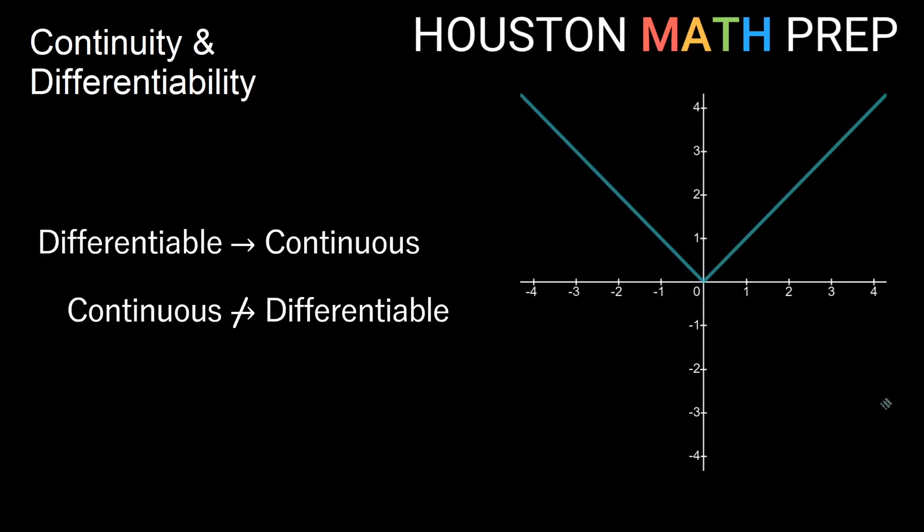Let's look back at this idea of y equals absolute value of x. And look at this point, the origin here. Is it continuous here? Yes. Is it differentiable? No. So just because I was continuous at the origin didn't mean I was also differentiable. It's a sharp point. It's not differentiable there.